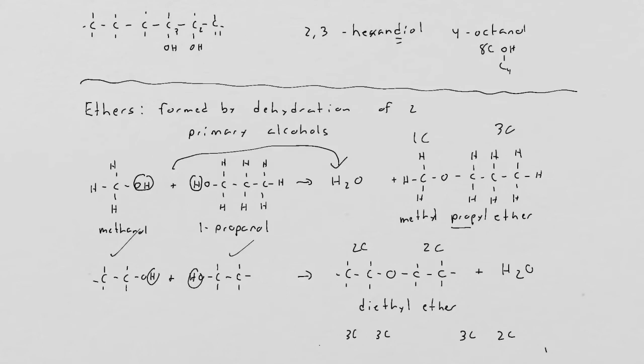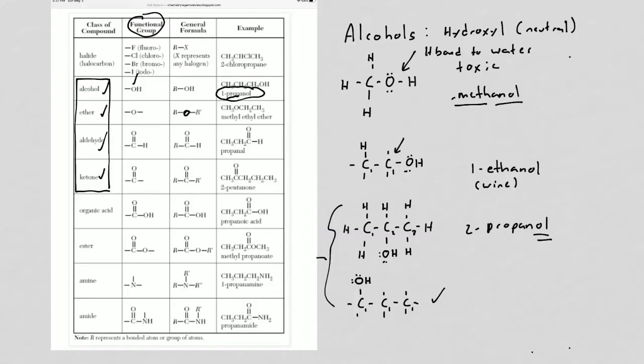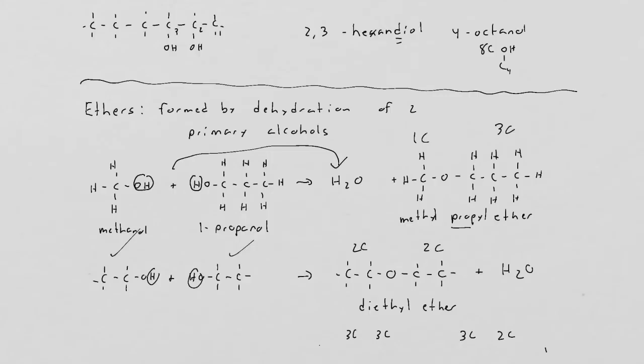The nomenclature system: this is methyl ethyl ether, meaning there's one carbon on one side and oxygen, two carbons on the other. If there's three carbons on both sides, we call it propyl propyl ether or dipropyl ether. If there's three carbons and two carbons, then you've got an ethyl and a propyl, so this will be called ethyl propyl ether.